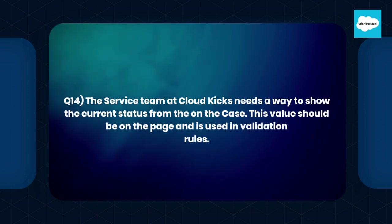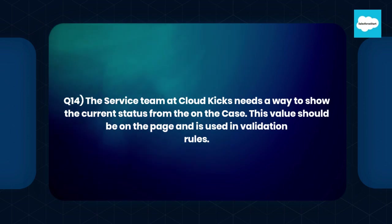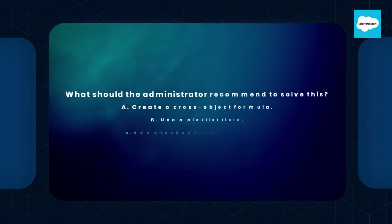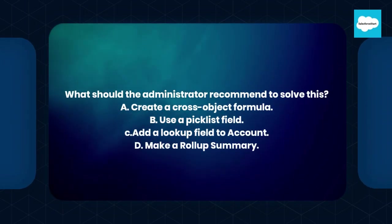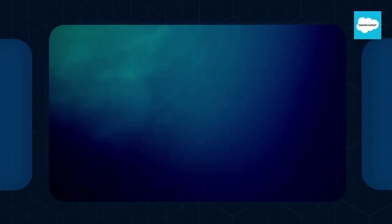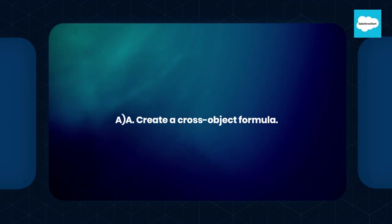Question number 14. The service team at CloudKix needs a way to show the current status from the account on the case. This value should be on the page and is used in validation rules. What should the administrator recommend to solve this? A. Create a cross-object formula. B. Use a picklist field. C. Add a lookup field to account. D. Make a roll-up summary. Answer: A. Create a cross-object formula.